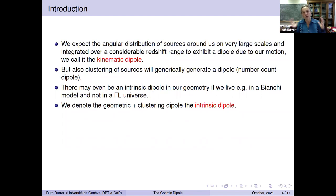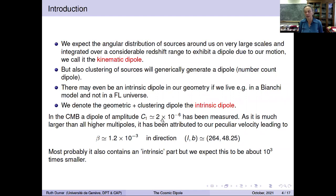We expect that the angular distribution of sources around us on very large scales, integrated over a considerable redshift range, should exhibit a dipole which is due to our motion, that we call the kinematic dipole. But of course, also the clustering of sources will generically generate a dipole, an under-count dipole. In addition, there may be an intrinsic dipole of our geometry if we would live, for example, in a Bianchi model and not in a Friedmann universe. We shall denote the combination of these last two, the geometric and the clustering dipole, as the intrinsic dipole. The CMB dipole amplitude has been measured with high precision. If it is attributed to our velocity, this leads to a velocity of 1.2 times 10^-3 in a very well measured direction. And it probably also contains a small portion of an intrinsic dipole, but we expect it to be two or three orders of magnitude smaller than the motion dipole.